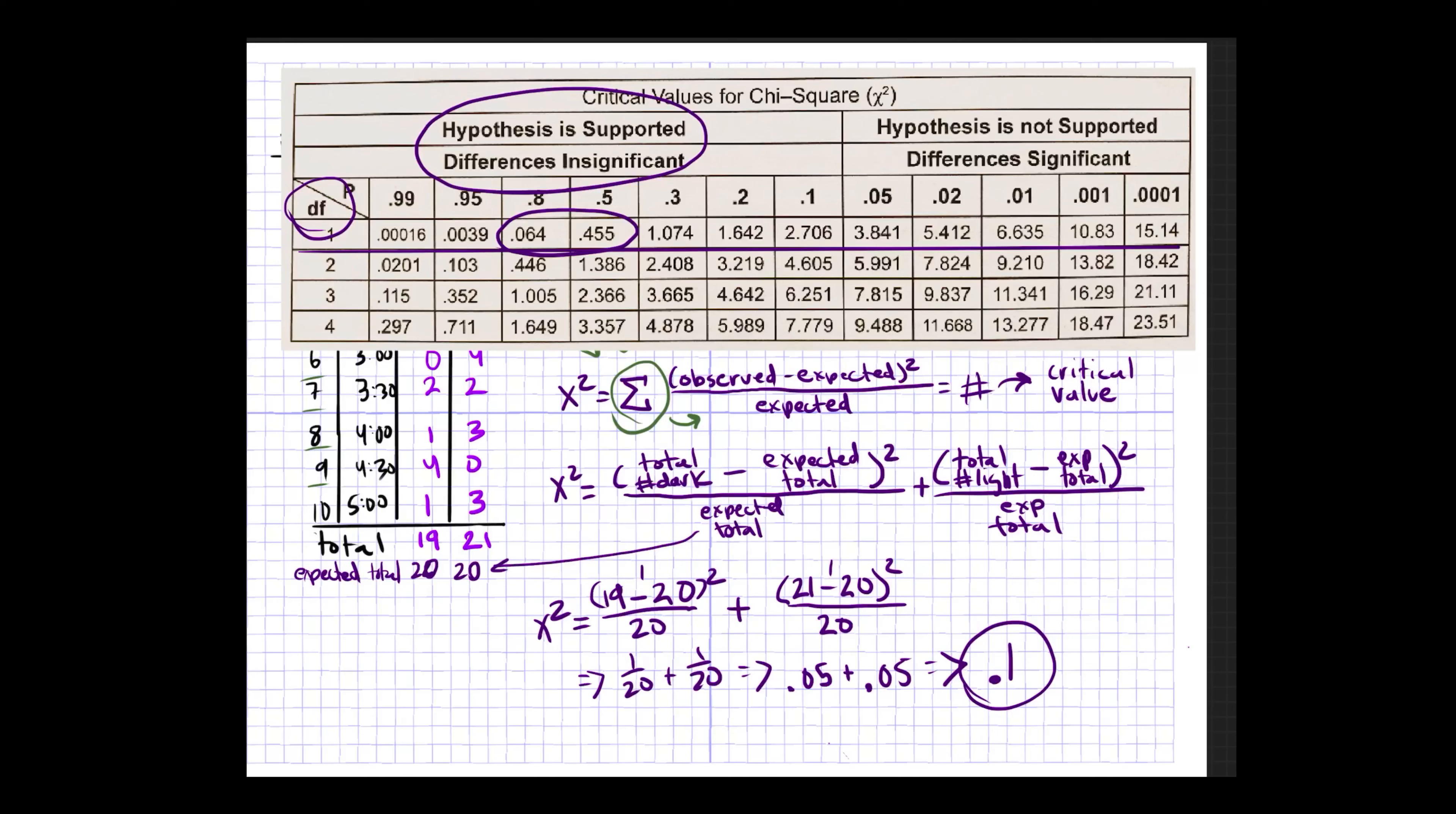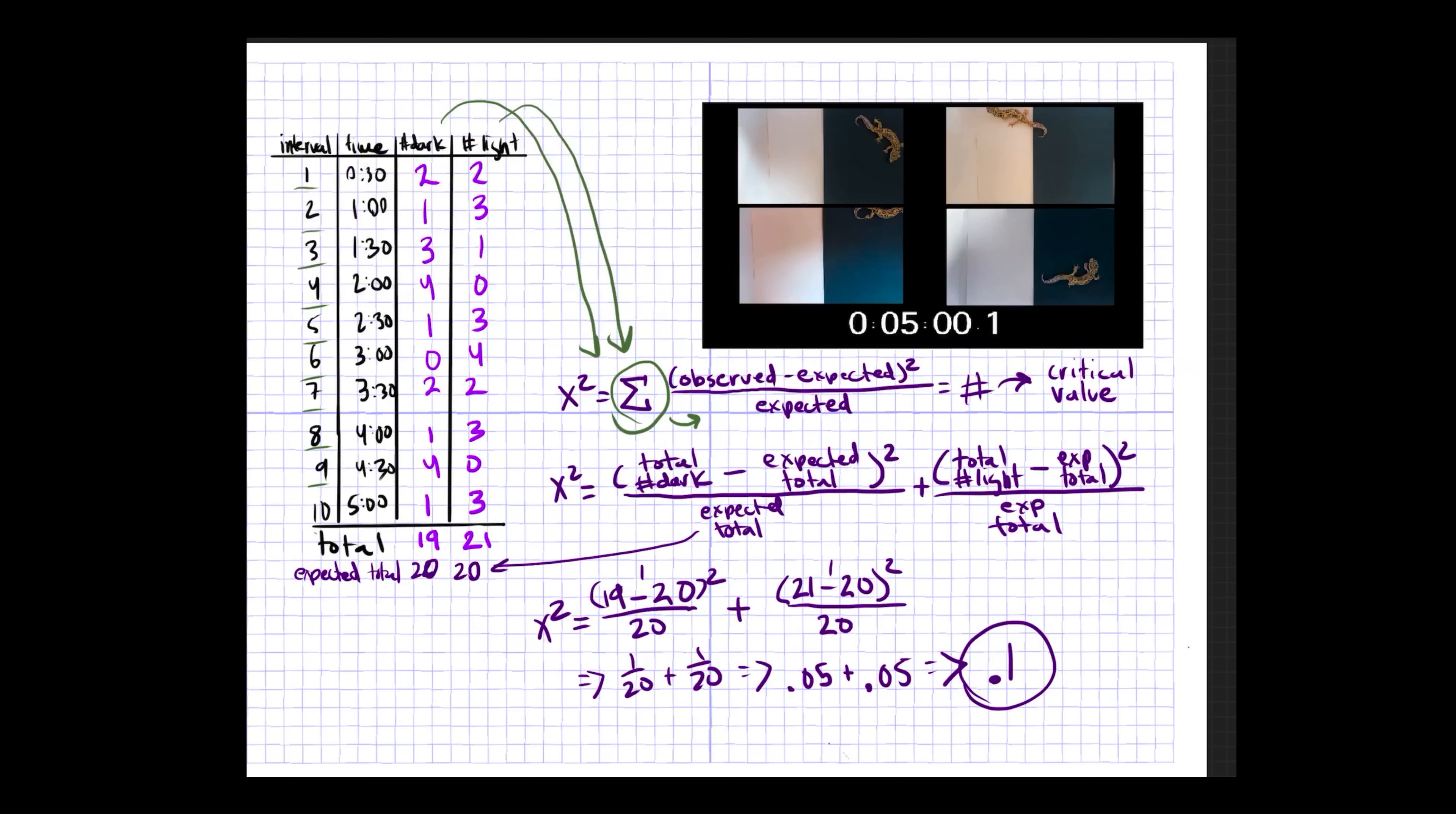And you can see that 19 and 21 are pretty close to 20 and 20, which are the values that we know they would be if there was no difference between the two groups. Now what you're going to do is use your own data and find your own critical value and evaluate whether you're going to accept or reject the null hypothesis. And remember, the null hypothesis is that there's no significant difference between these groups.